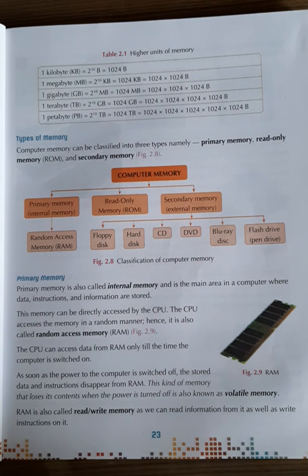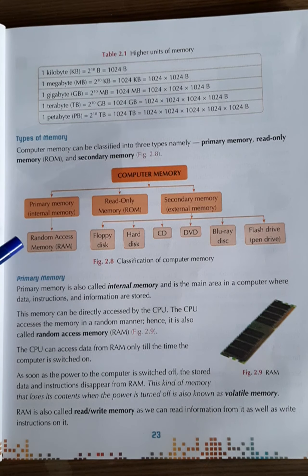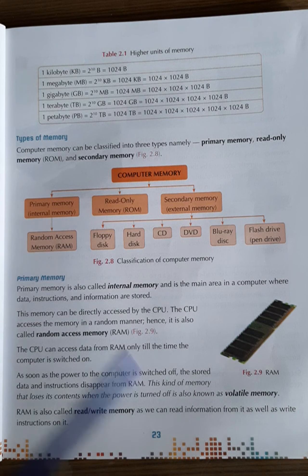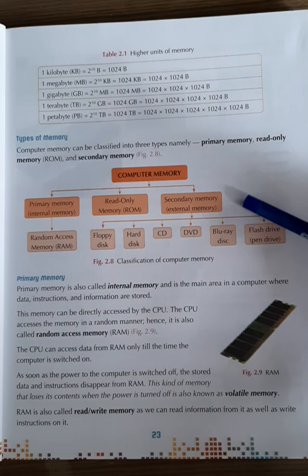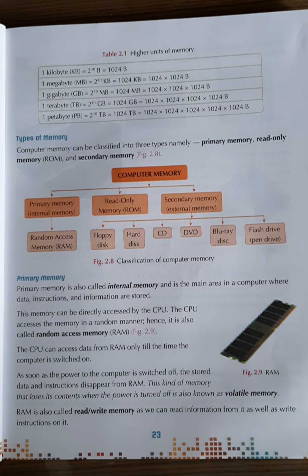Next are the types of memory. Computer memory can be classified into three types: primary memory, read-only memory, and secondary memory. We consider two main categories. First is primary memory — the internal memory which includes RAM and ROM. Second is secondary memory — the external memory — which is further divided into categories like floppy disk, hard disk, CDs, DVDs, Blu-ray disk, and flash drives or pen drives.